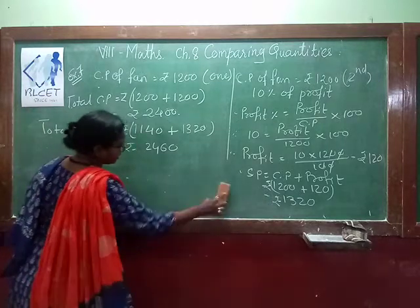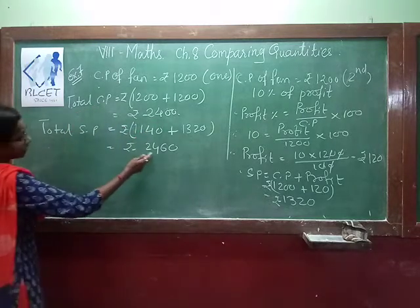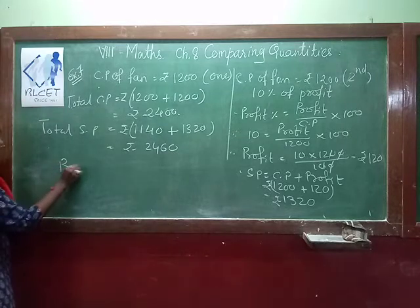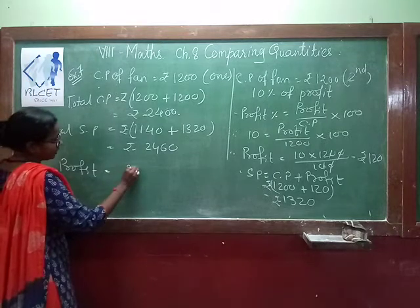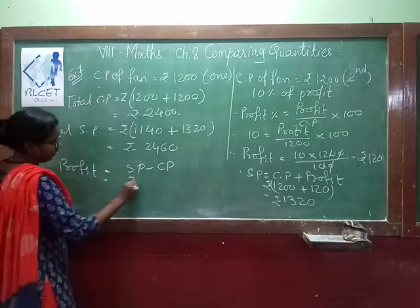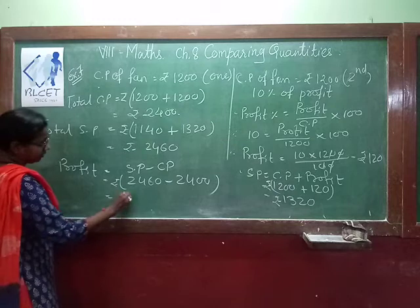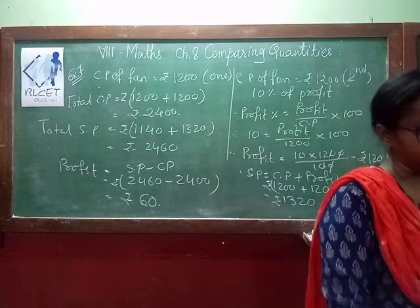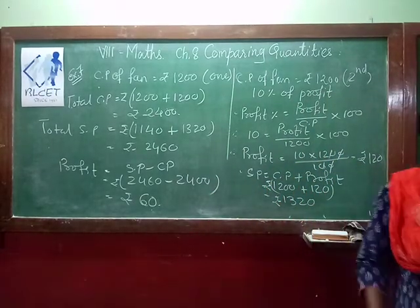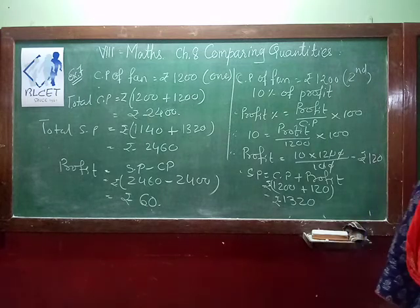Since the total selling price Rs.2460 is greater than total cost price Rs.2400, there is an overall profit. Profit = total selling price − total cost price = Rs.2460 − Rs.2400 = Rs.60. This is the total gain or profit. This is all about how to find profit percent and loss percent. In the next video we will see the next example. Thank you.